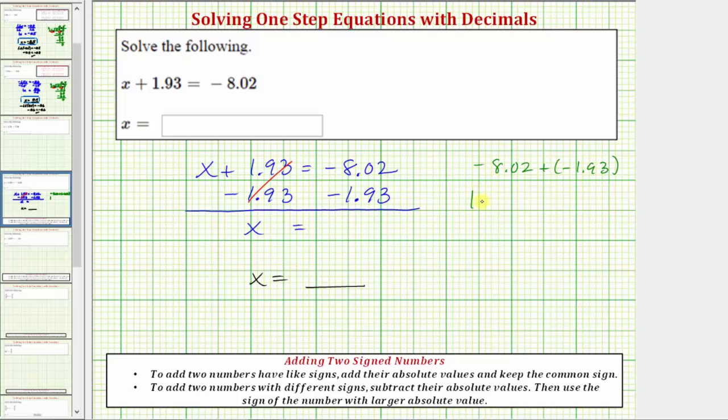Now let's find their absolute values. The absolute value of negative 8.02 is equal to positive 8.02. And the absolute value of negative 1.93 is equal to positive 1.93. So we're going to add their absolute values and then keep the common sign, which is negative.